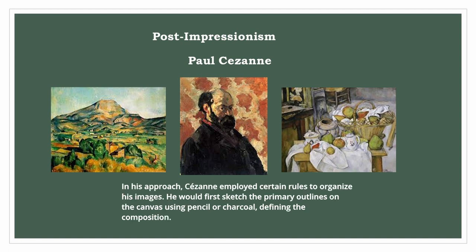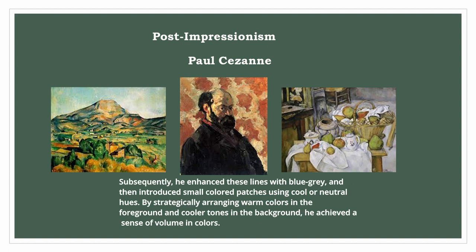In his approach, Cézanne employed certain rules to organize his images. He would first sketch the primary outlines on the canvas using pencil or charcoal, defining the composition. Subsequently, he enhanced these lines with blue-gray, and then introduced small colored patches using cool or neutral hues.